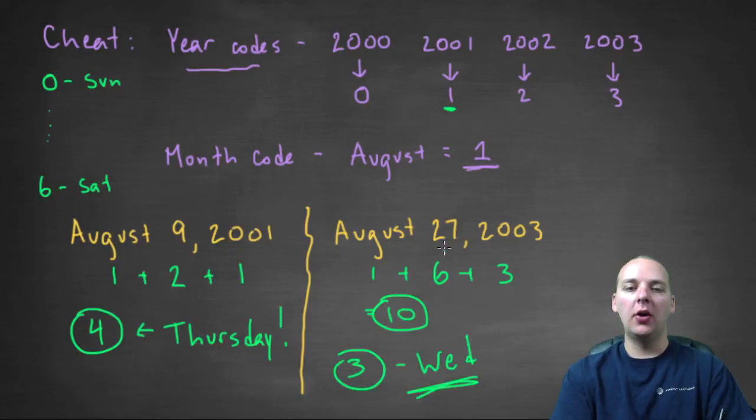So, August 27th, 2003, a completely different year, would be a Wednesday.